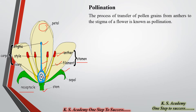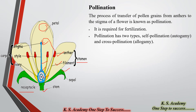Pollination is the process of transfer of pollen grains from the anther to the stigma of a flower. This transfer is required for fertilization to take place. Pollination is of two types: self-pollination, also known as autogamy, and cross-pollination, also known as allogamy.